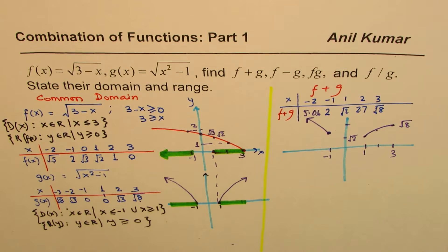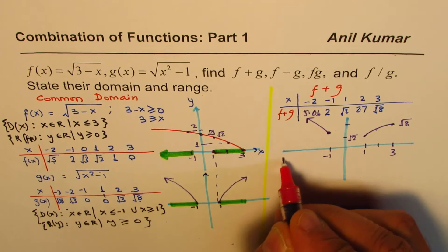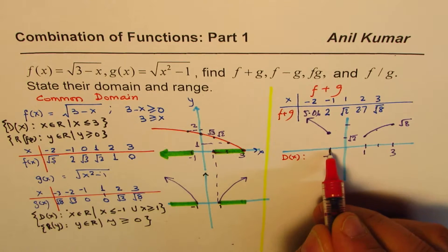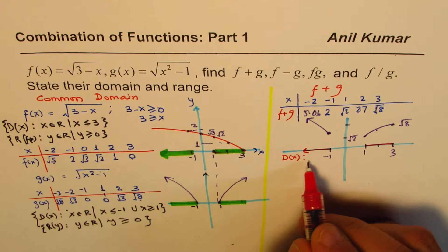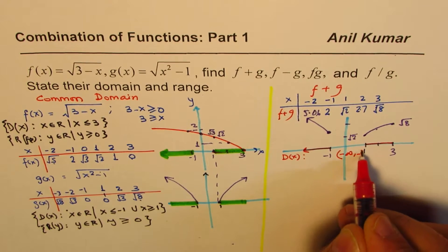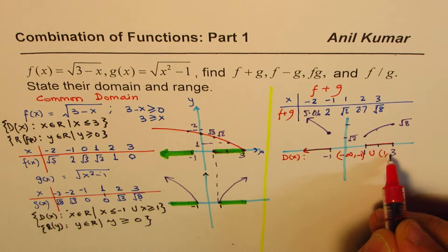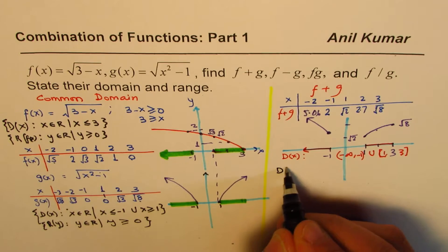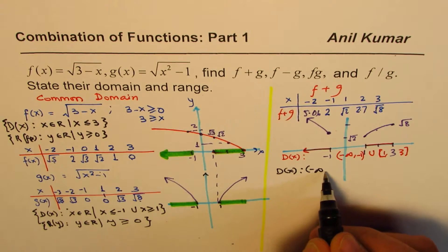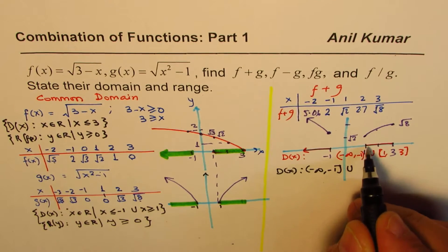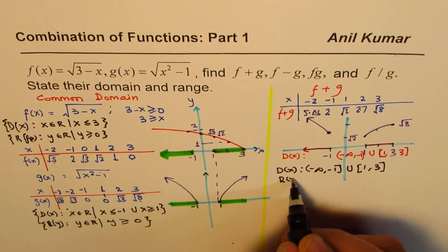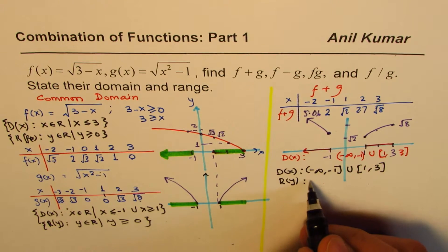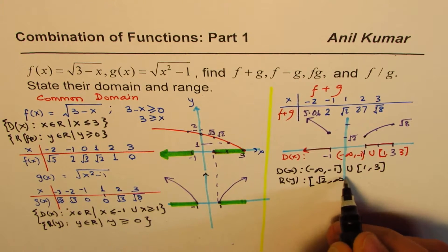From the graph, we can write the domain and range of f plus g. The domain is from minus infinity to minus 1, union 1 to 3, where minus 1, 1, and 3 are all included but minus infinity is not. The range of this function: the smallest value is square root of 2, so the range is from square root of 2 to infinity, including square root of 2.